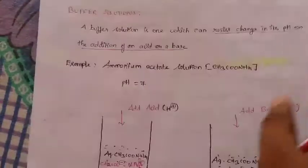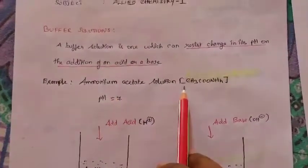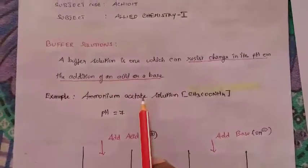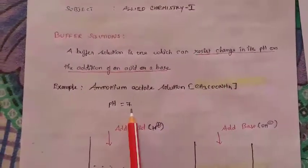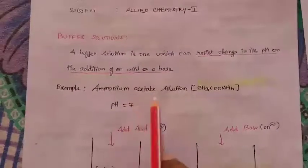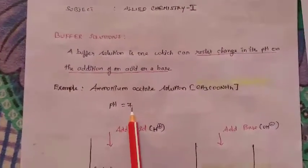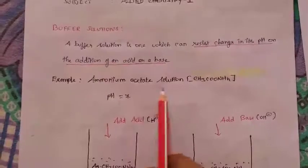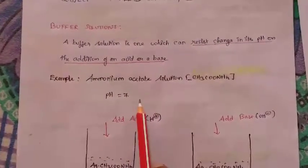As an example, I am taking ammonium acetate solution. If we take the pH for this solution, it is around 7. The pH for our ammonium acetate solution is 7, and that is why we are taking it as a buffer solution.